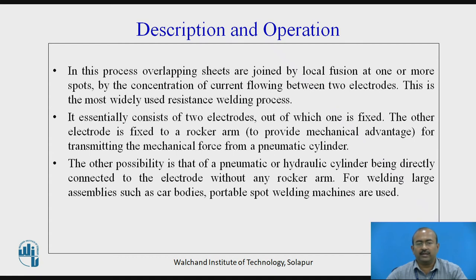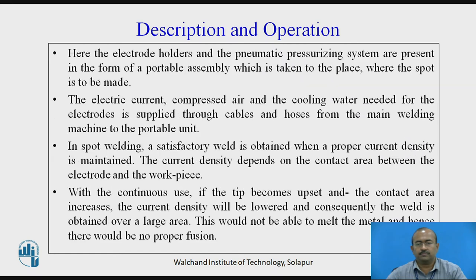The electrode can be connected to a pneumatic or hydraulic cylinder directly without any rocker arm. For welding large assemblies such as car bodies, portable spot welding machines can be used, where the electrode holders and pneumatic pressurizing system are in portable form. Electric current, compressed air, and cooling water are supplied through cables and hoses from the main machine to the portable unit. A satisfactory weld is obtained when proper current density is maintained. With continuous use, if the tip becomes upset and contact area increases, current density lowers and the weld is obtained over a large area, which may not achieve proper fusion.